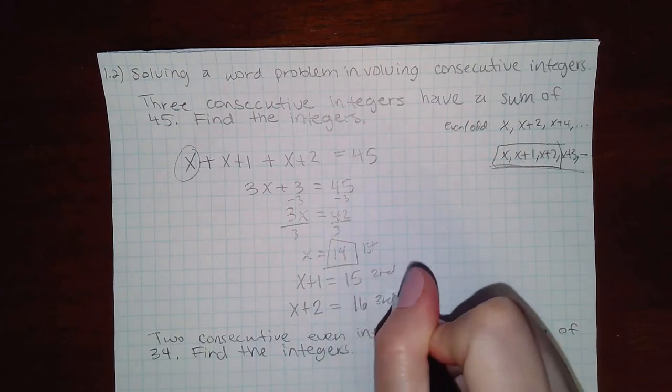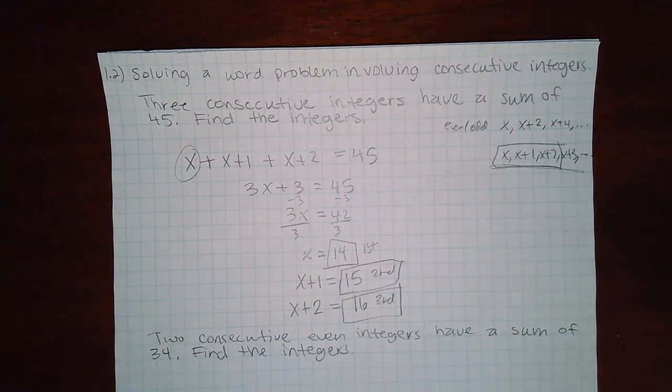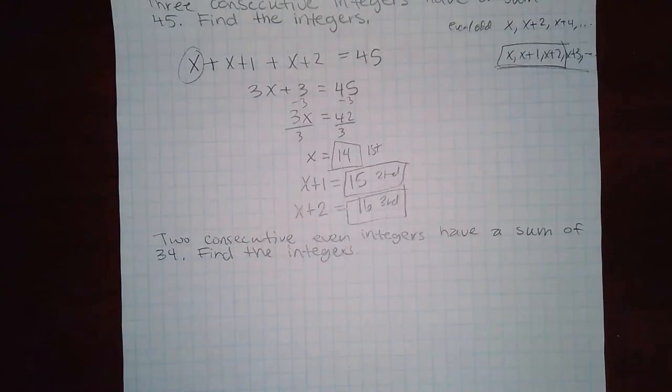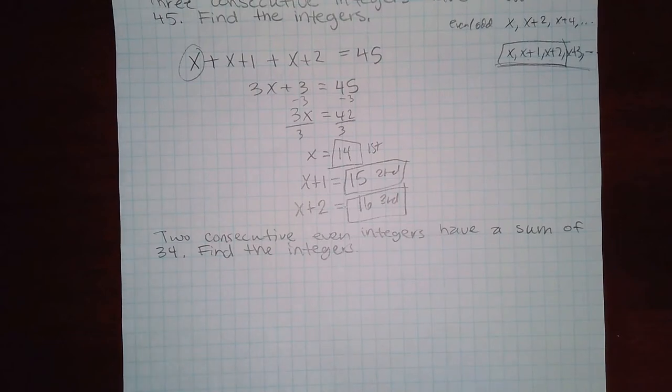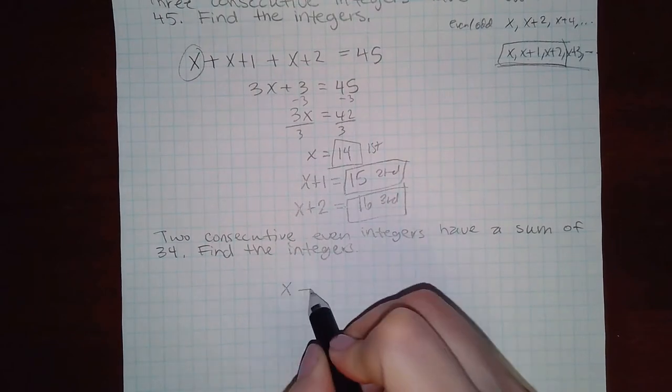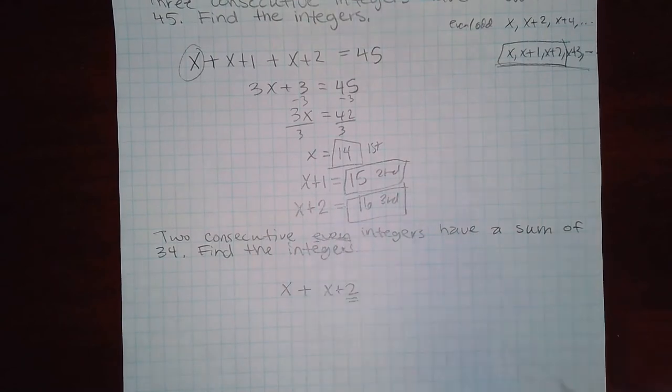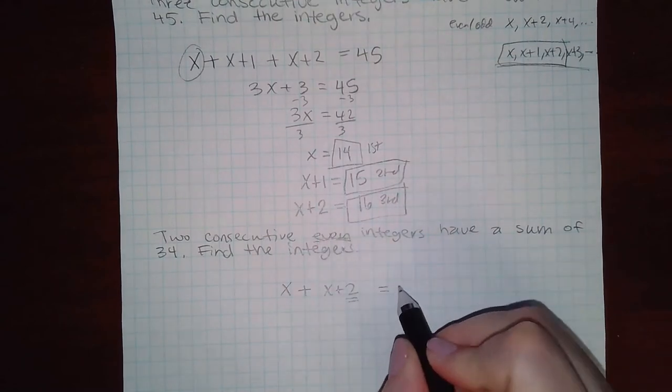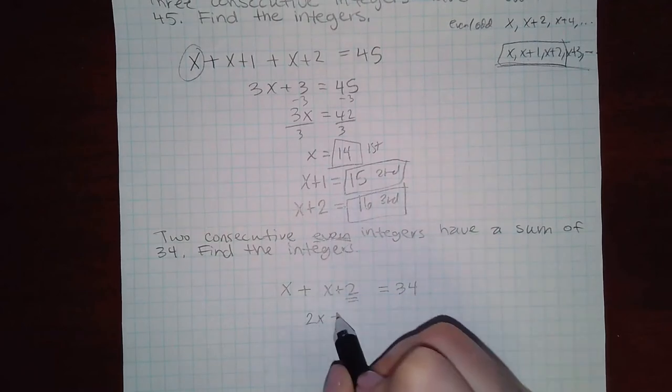Now let's see the next problem. It says two consecutive even integers have a sum of 34. So you have one page plus the second even page, which is why I have to add 2, should equal 34. If I combine my like terms I have 2x plus 2 equal to 34.